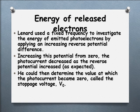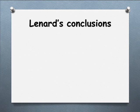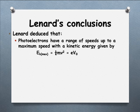What was Lenard able to conclude from these experiments? First, photoelectrons have a range of speeds — they get a maximum kinetic energy for those released with the most energy, all the way down to about zero. The maximum kinetic energy is given by ½mv², which is equivalent to eV₀, where e is the charge on the electron and V₀ is the stopping voltage for the maximum energy electron.